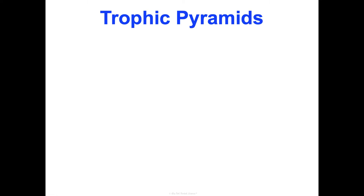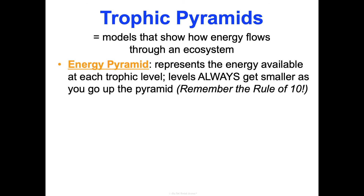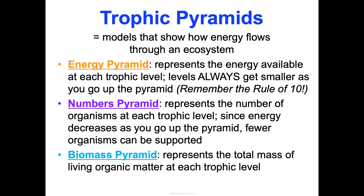We can also organize the flow of energy in a trophic pyramid — a model that shows how energy flows through an ecosystem. It can show one of three things: the amount of energy available at each trophic level (levels get smaller as you go up because of the rule of 10), the number of organisms at each trophic level, or a biomass pyramid representing the total mass of living organic matter at each trophic level.